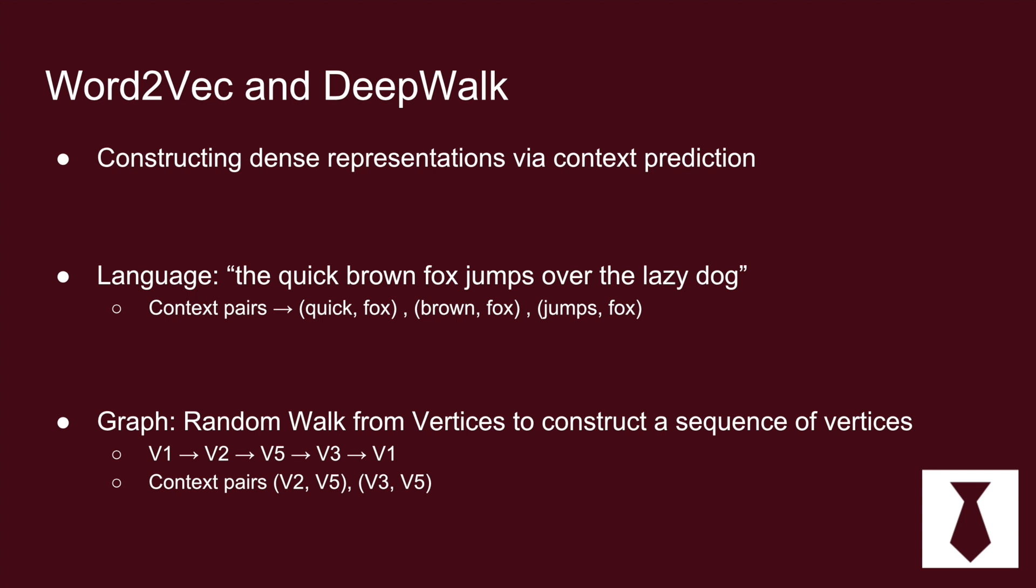And so similar to text you say that a random walk on vertices can construct a similar sequence that is analogous to a sentence. So you have these contexts like v2v5 and v3v5 and you use them to predict each other in the context and thus you construct a dense continuous vector representation of this sparse data via the context prediction mechanism.